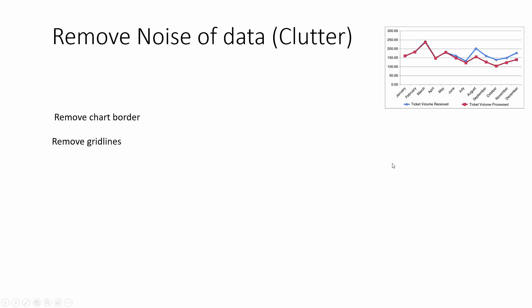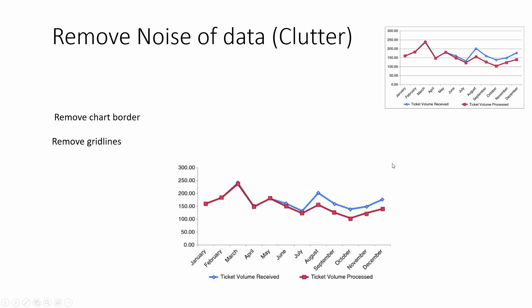Another one is grid lines. Sometimes we create charts and we need grid lines for alignment when we design, but after that having grid lines doesn't actually add that much information to the user. The user can still find what is the top number and what is the bottom just by looking at it. If there are lots of data points and you think grid lines can be really useful, then yes — but in most scenarios we don't need grid lines.